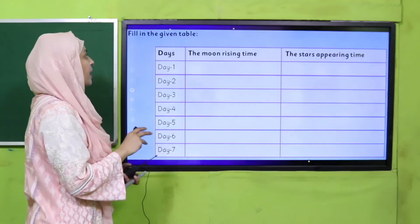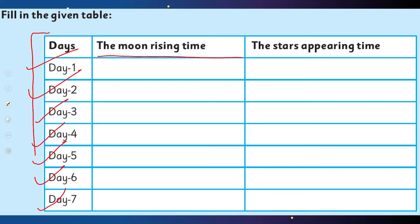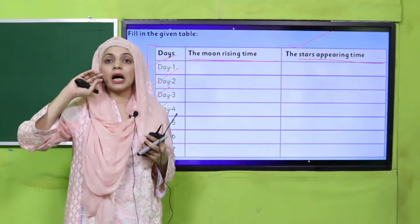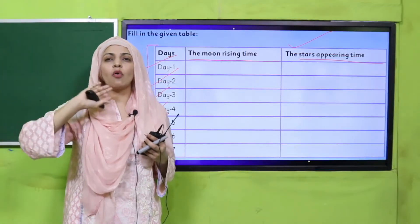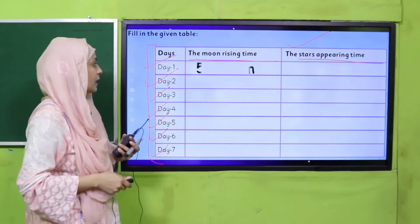Uske baad aapne is table ko fill karna hai. Moon rising time — aapne Day 1, Day 2, Day 3, Day 4, Day 5, Day 6, Day 7 — poore full week ke liye note karna hai. Stars appearing time bhi note karni hai. Kyunki chand aapko zara jaldi nazar aana shuru hota hai — sitare zameen se bahut door hain, toh thodi der baad nazar aana shuru hote hain jab thodi complete darkness hone lagti hai.